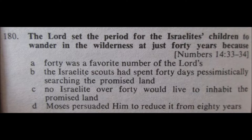D, not correct — similar to the story with Abraham, but I don't think it's the correct one here. C, no Israelite over 40 — I don't think that's the reason. I think the reason is really B, the Israelite scouts had spent 40 days pessimistically searching the promised land. So for 180, I'm going to select B as the correct answer.